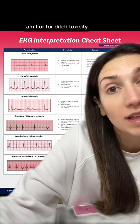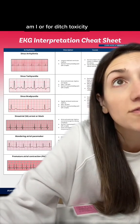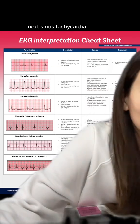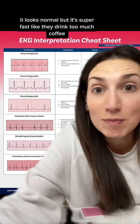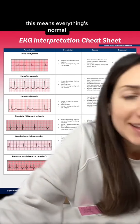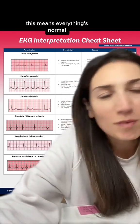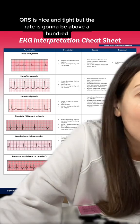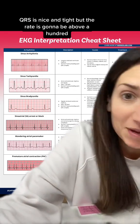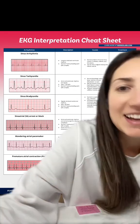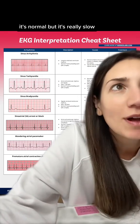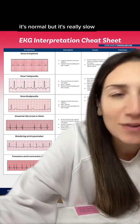Also seen with inferior wall MI or dig toxicity. Next, sinus tachycardia — it looks normal but it's super fast, like they drank too much coffee. Everything's normal: there's a P for every QRS, the QRS is nice and tight, but the rate is going to be above 100.